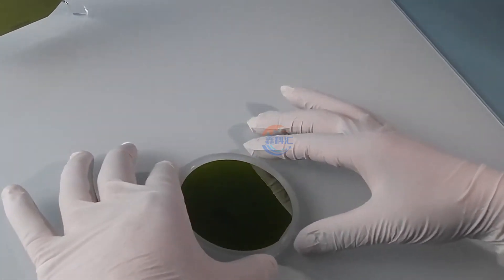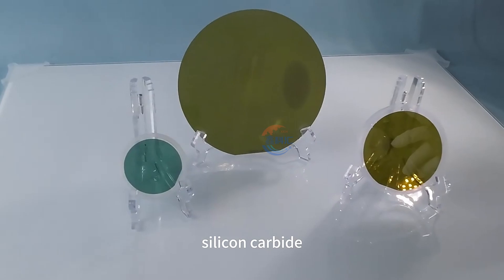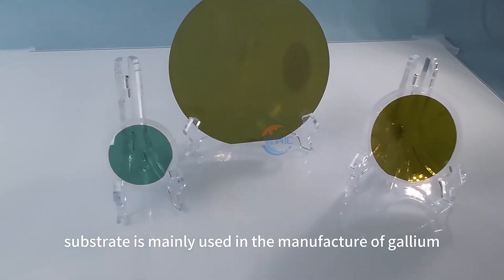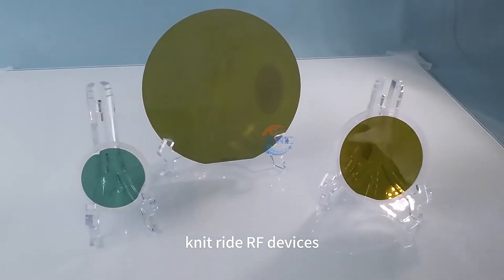Among which, semi-insulated silicon carbide substrate is mainly used in the manufacture of gallium nitride RF devices.